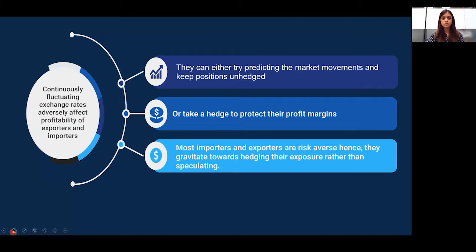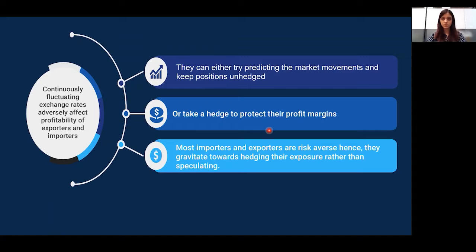Importers and exporters are constantly exposed to the volatility of foreign currency rates. Such exchange rates are continuously fluctuating and can adversely affect the profitability of businesses. Most foreign currency rates are extremely volatile and hence need regular monitoring. Businesses can either try predicting market movements and keep their positions unhedged, or they can take a hedge and protect their profit margins. Depending upon their risk appetite, exporters and importers hedge their forex exposures or keep the positions open.